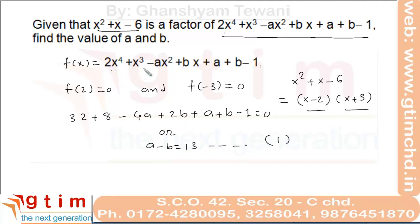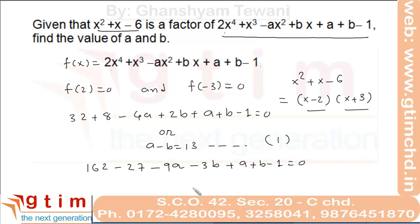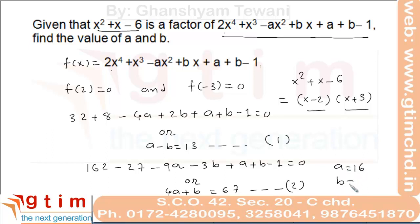Now put x equal to minus 3 into this expression and simplify to get 4a plus b equal to 67. We can now get the values of a and b by solving the two equations, giving a equal to 16 and b equal to 3.